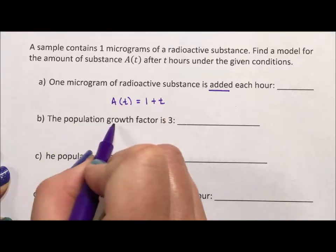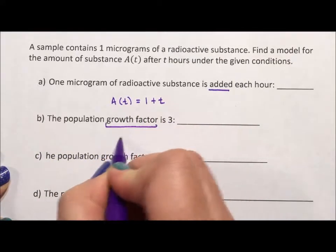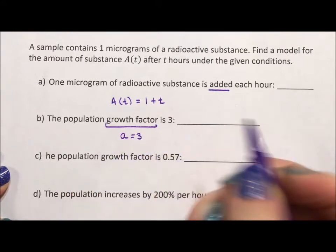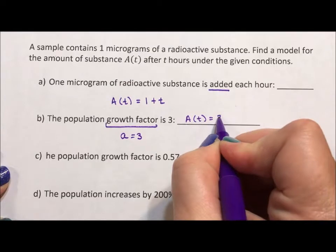The population growth factor is 3. The growth factor is a, so a = 3. So A(t) equals 1 times 3 to the t.